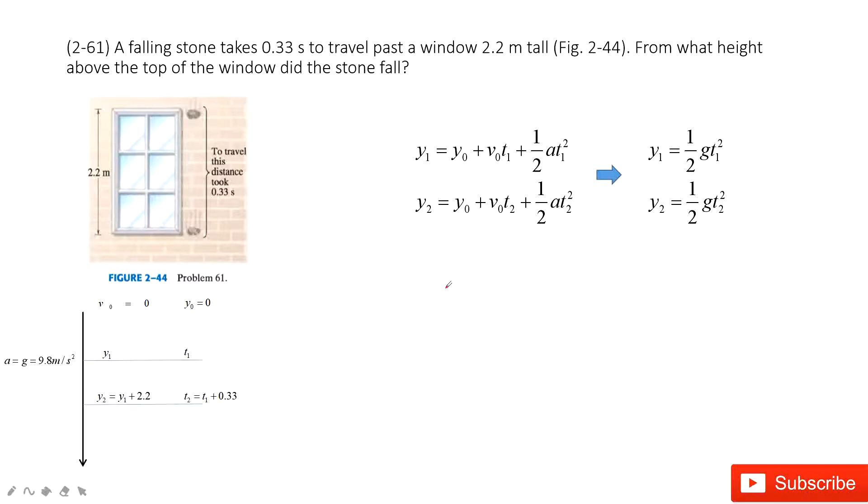And then we can say there is a relationship between y2 equals y1 plus 2.2 and t2 equals t1 plus 0.33. So then we can input these equations inside.